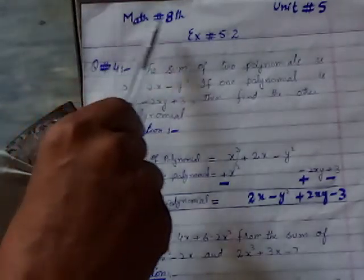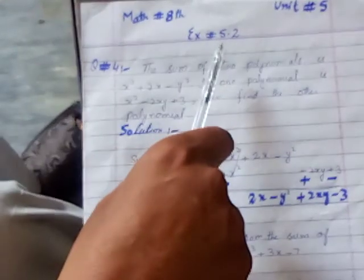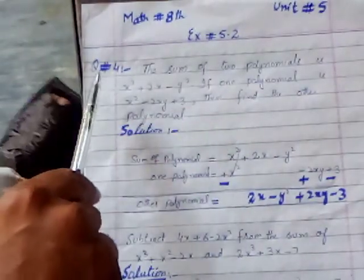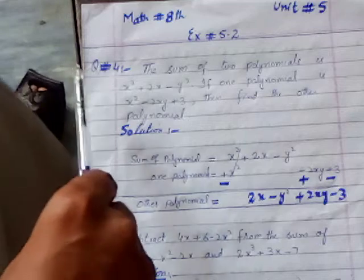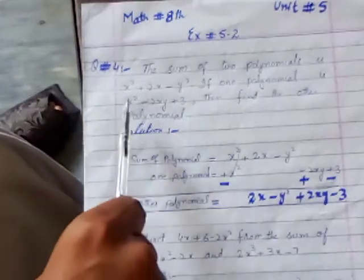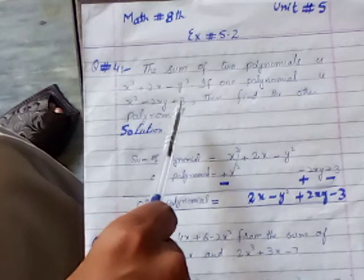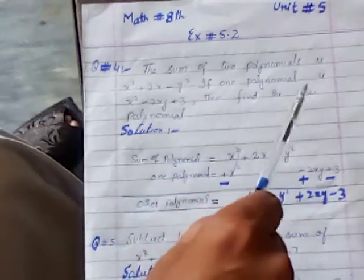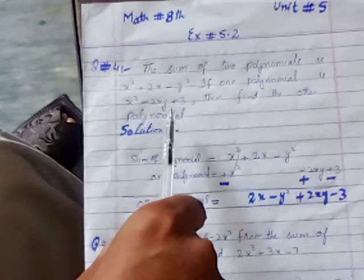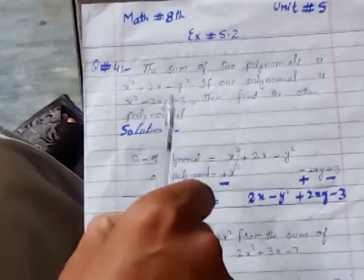Bismillahirrahmanirrahim. Math 8th Class General, Exercise 5.2, Question 4. The sum of two polynomials is x squared plus 2x minus y squared. If one polynomial is x squared minus 2xy plus 3, then find the other polynomial.